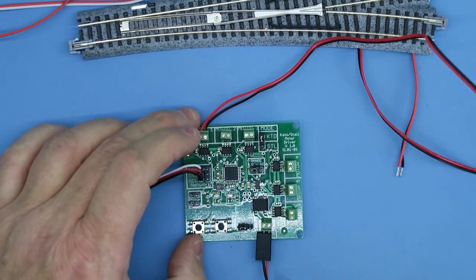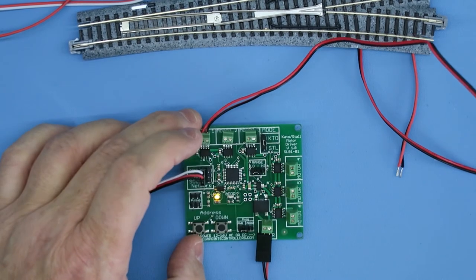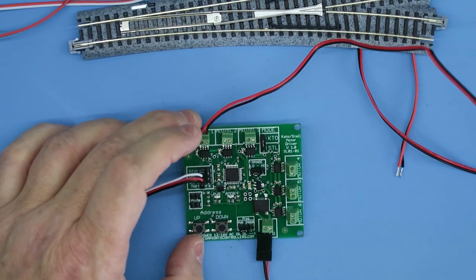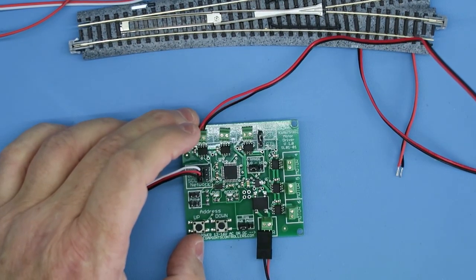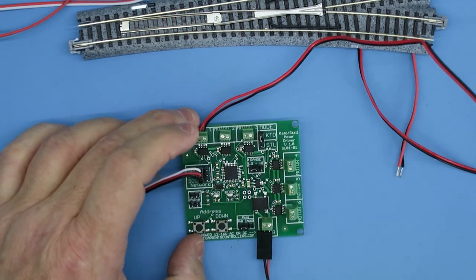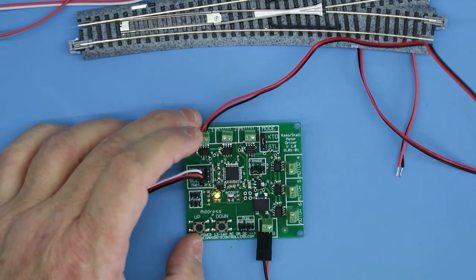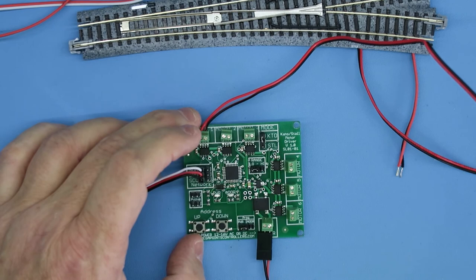Or as you probably know by now, if you mix up this board with the different types of boards, then you can have servos, solenoids, Kato points, and even tortoise motors all up on the same layout, if you were so inclined.